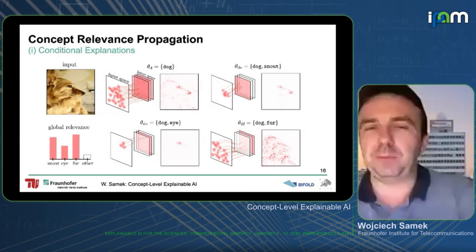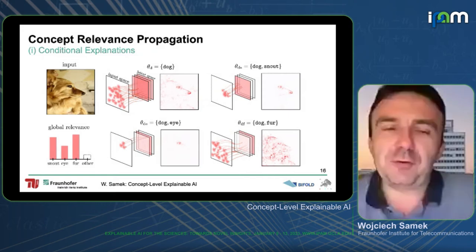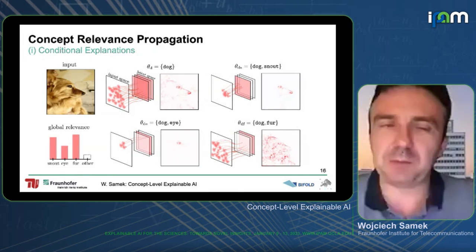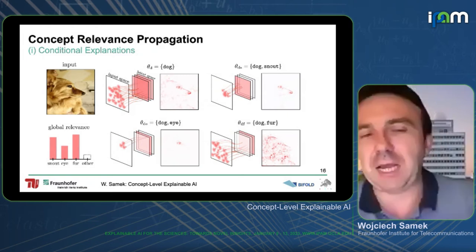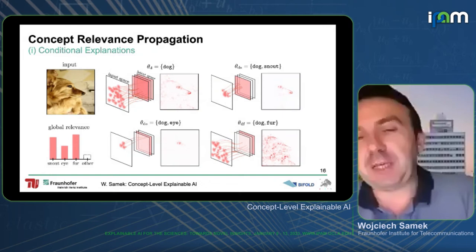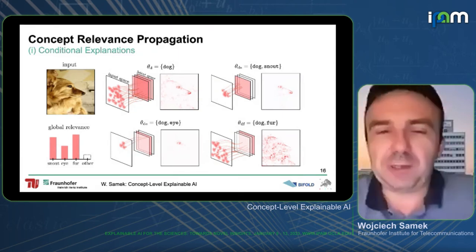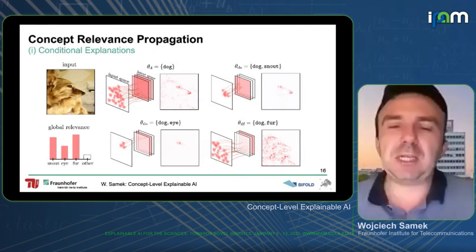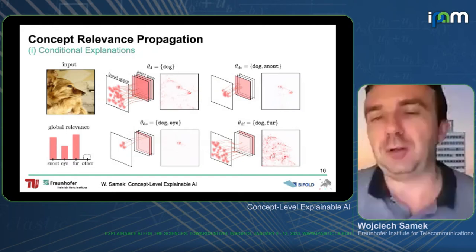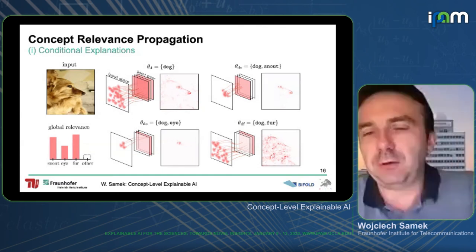You can even measure the relevance of individual concepts for the prediction. For example, the concept 'fur' is more important than the concept 'eye' for a specific dog prediction. If you just look at the superposition of all concepts, you won't see this, because 'fur' is distributed all over the image whereas 'eye' is much more focused. So by having this multitude of explanations you can really see how much each concept affects the prediction.